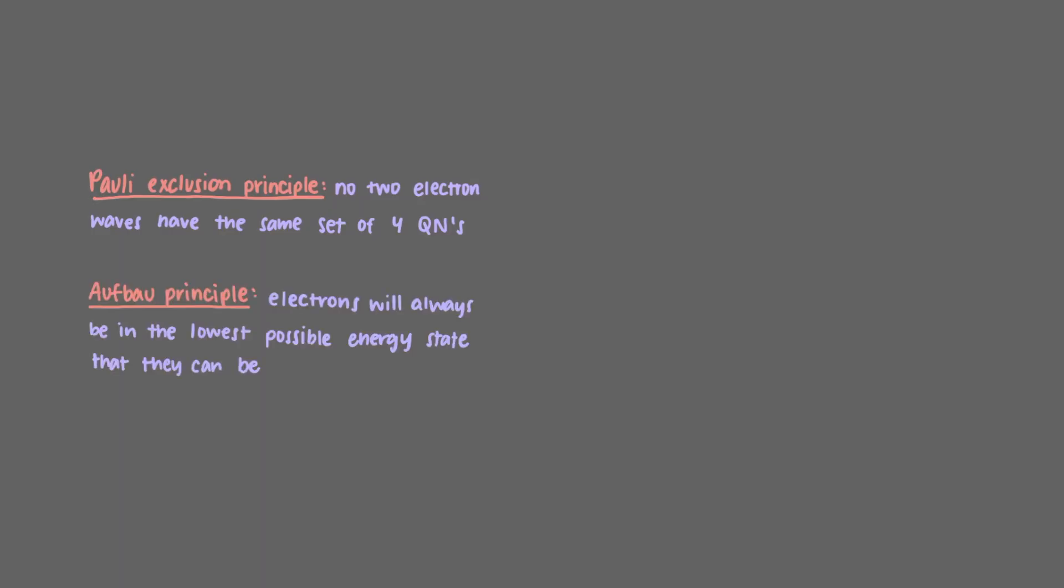So now let's go back to the Pauli exclusion and Aufbau principles. We define the Pauli exclusion principle as saying that no two electron waves can have the same set of four quantum numbers, and we define the Aufbau principle as saying that electrons will always be in the lowest possible energy state that they can be.